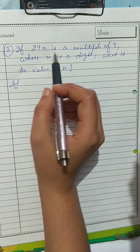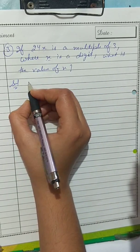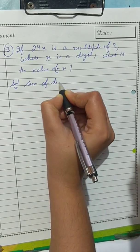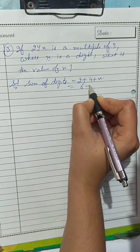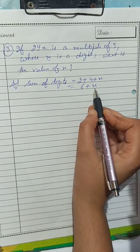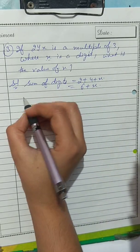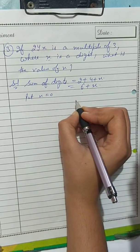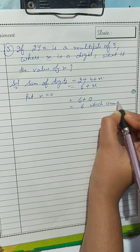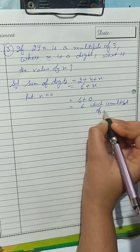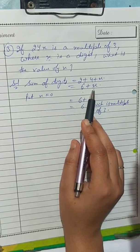Since 24x is a multiple of 3, we find the sum of digits: 2 + 4 + x = 6 + x. For this to be a multiple of 3, the sum must appear in the table of 3. First, put x = 0: 6 + 0 = 6, which is a multiple of 3.